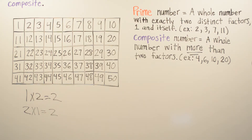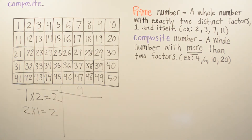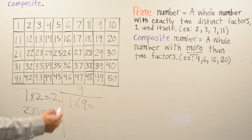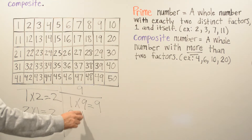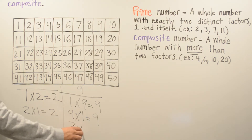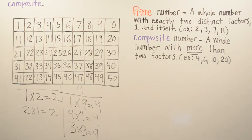Now, what numbers can we multiply to give me 9? We can do 1 times 9, or 9 times 1, which is 9, and we can also do 3 times 3, which gives us 9. As you can see, there are different ways. A composite number is a whole number with more than two factors. The factors of 9 are 1, 9, and 3. So for that reason, 9 is going to be a composite number.